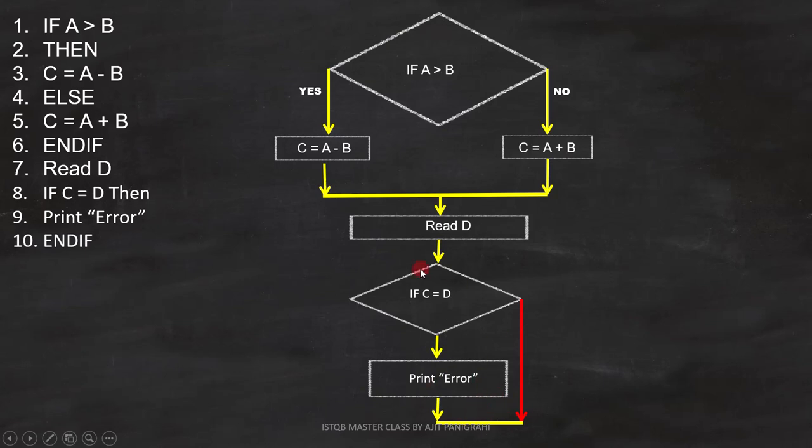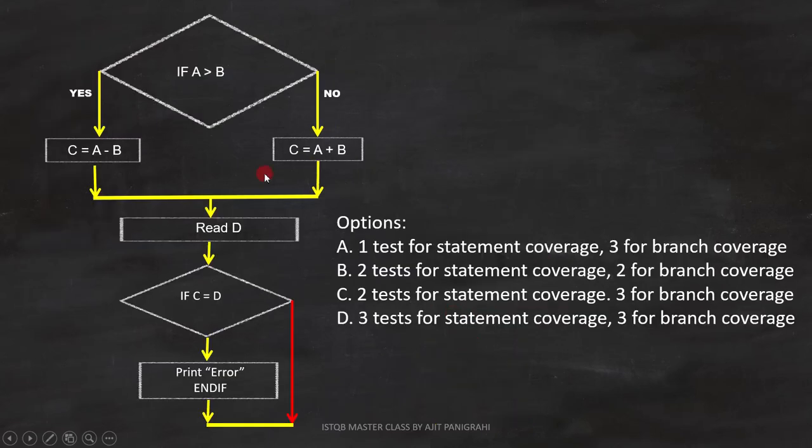Now the flowchart is ready for analysis. We have to find number of test cases required to cover statement coverage and branch coverage. Let's first find the number of test cases required for statement coverage. With this path, we can cover three statements. But one statement is not covered, so we need one more test case to cover it.